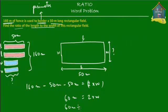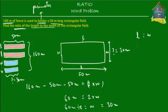So the two blue blocks combined are equal to 60 meters, and this is twice the width. So the width equals 60 meters divided by 2, which is 30 meters. The width is equal to 30 meters. Now what we have to find out is the ratio of the length to the width. The length is equal to 50 meters and the width is equal to 30 meters.